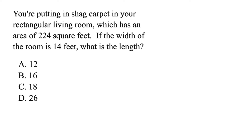You're putting in some shag carpet in your rectangular living room, why not, which has an area of 224 square feet. Now let's pause there. Let's go ahead and draw this out. The area is 224, let's put that in the middle. If the width of the room is 14, let's put that on the right side. What is the length? We'll call it the bottom. We know that the length times the width will give us the whole area. But notice, they give us options for what that bottom part might be. So we could use their answers, plug them in, see if it gives us 224.